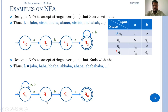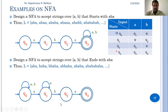This NFA can also be modified further. From q1 if we get A as input, we should go to a state from which we can still read BA to reach the final state, so we make a self-transition from q1 on A back to q1. On q2, if we get a B, we need to go to a state from which reading ABA will still reach the final state, so we transition from q2 on B back to q0.